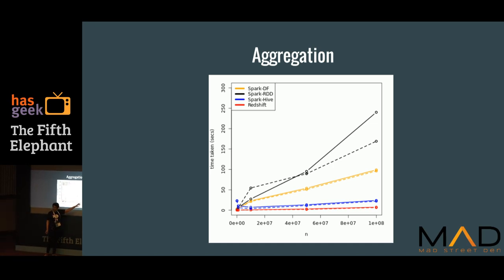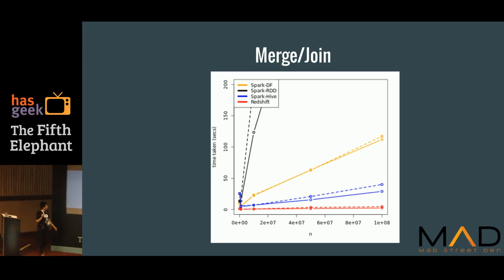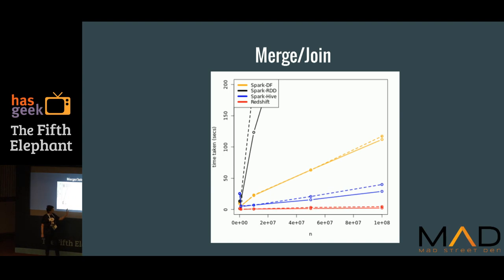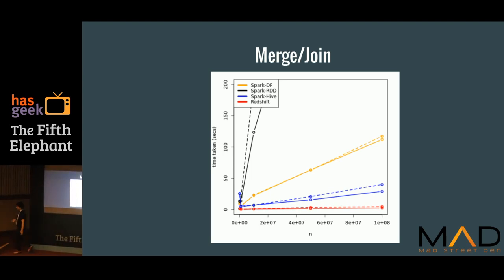The blue line is basically Spark with the data materialized into Hive. So you can see when it's within the table, the performance is comparable. The other two lines represent data held in memory — this is DataFrame, and the black one is RDD. DF is doing better than RDD if you have data in memory. For inner join as well, Redshift is doing well, followed by Spark with Hive. Clearly through the slides, DF is consistently performing better than RDD for in-memory operations. If you're going for a table, you would compare the Hive-backed options — otherwise it would be an unfair comparison.